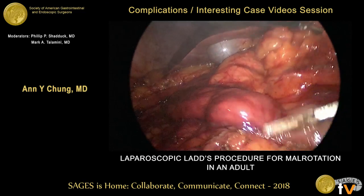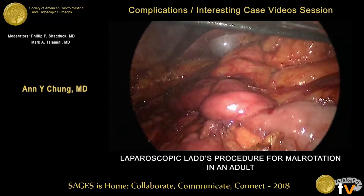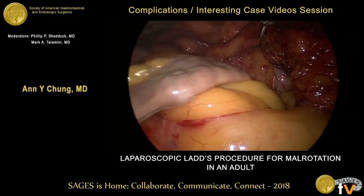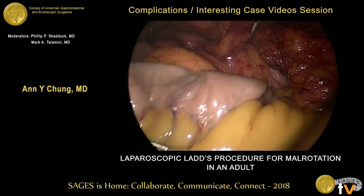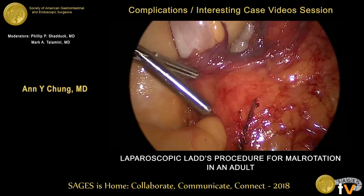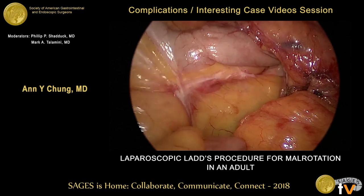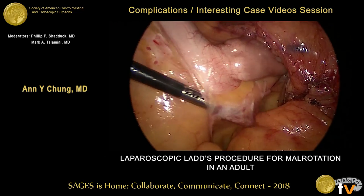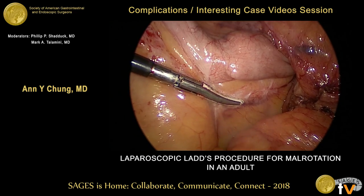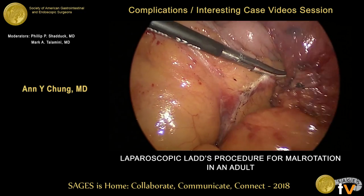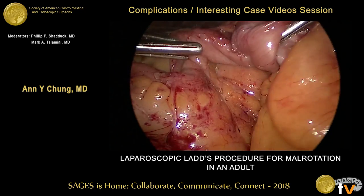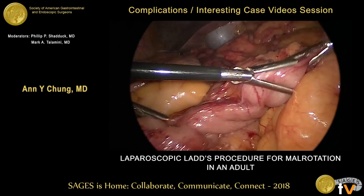Once the right colon and the duodenum were completely freed from each other, we ran the small bowel proximally towards the ligament of Treitz. As we were running the small bowel, we encountered adhesions from the bowel to the root of the mesentery. These were taken down and divided with electrocautery — notably in a patient who has had no prior abdominal surgeries. Once we took these adhesions down, we noticed that it helped to broaden the mesentery, which is also one of the important steps of a LADS procedure.